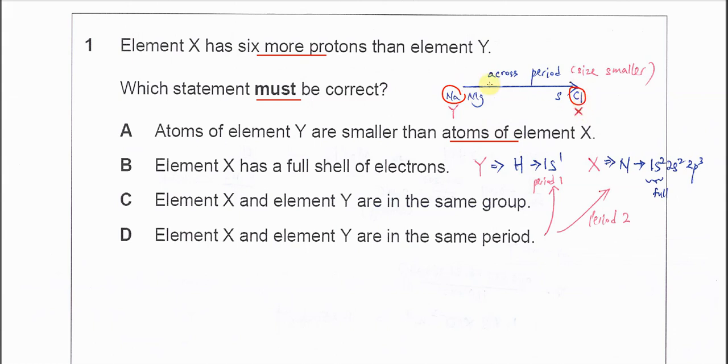We know that when it's across the period, size becomes smaller because proton number increases with constant shielding effect. So X can be smaller than Y. Not necessarily that Y is always smaller than X. Therefore, statement A is not true.